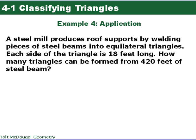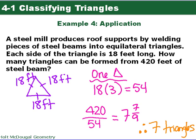Okay, in our last example, we have a steel mill produces rope supports by welding pieces of steel beams into equilateral triangles. Each side of the triangle is 18 feet long. How many triangles can be formed from 420 feet of steel beam? Okay, so in this problem, given our triangles are equilateral, that means all three sides are each 18 feet long. So we drew that over here, 18 feet for each of these side lengths. So for one triangle, it's going to take 54 feet, because 18 times 3, three sides. It's going to take 54 feet of steel beam. We have 420 feet of steel beam. Divide that by how much it takes for one triangle. And we end up with 7 and 7 ninths. Well, we can't have a partial beam. So we can actually end up with 7 triangles all said and done.